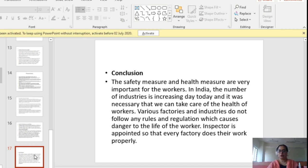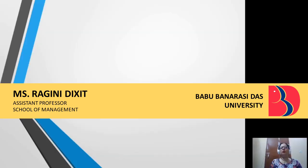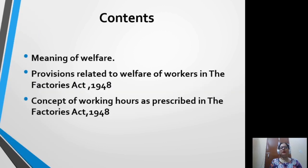In conclusion, safety measures and health measures are very important for workers. In India, the number of industries is increasing day by day, so it is necessary to take care of the health of workers. Various factories and industries do not follow rules and regulations, which causes danger to the life of workers. According to this Act, an inspector is appointed so that every factory does their work properly and takes proper measures to safeguard the health and safety of workers.